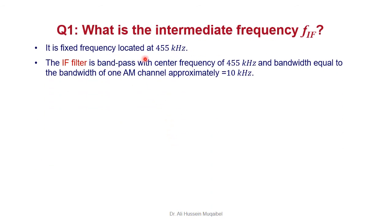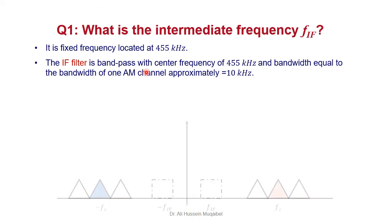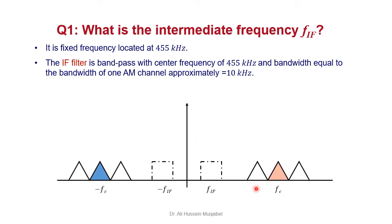What is the intermediate frequency? It is a fixed frequency — for AM, it is 455 kHz. A sharp band-pass filter with 10 kHz bandwidth is placed at this stage. Looking at the diagram, the channel of interest has center frequency FC, and the IF filter does not move. Instead of moving the filter to pick the signal, we move the signal into the window of the filter.